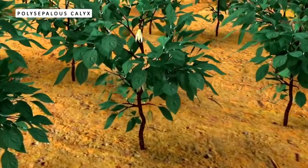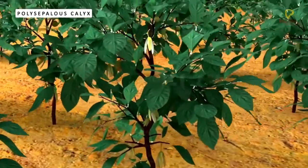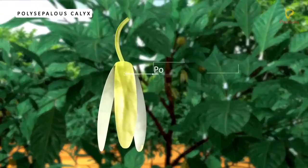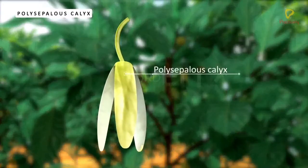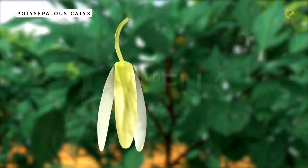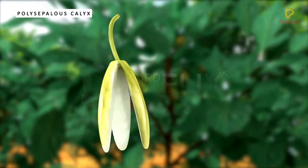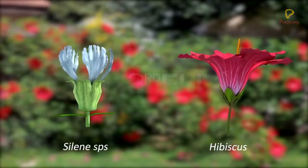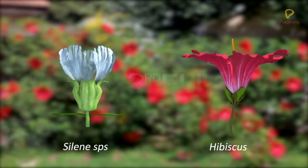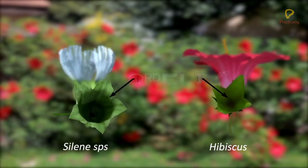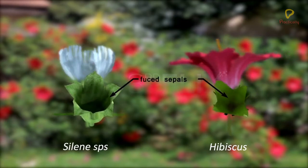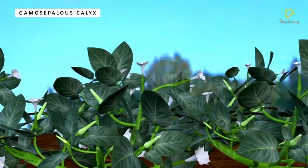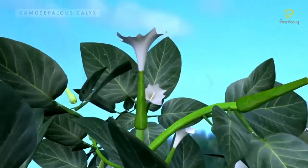In a polysepalous calyx, the sepals are free. Polysepalous calyx is seen in the flowers of Annona. In a gamosepalous calyx, the sepals are fused. Gamosepalous calyx is seen in the flowers of Datura.